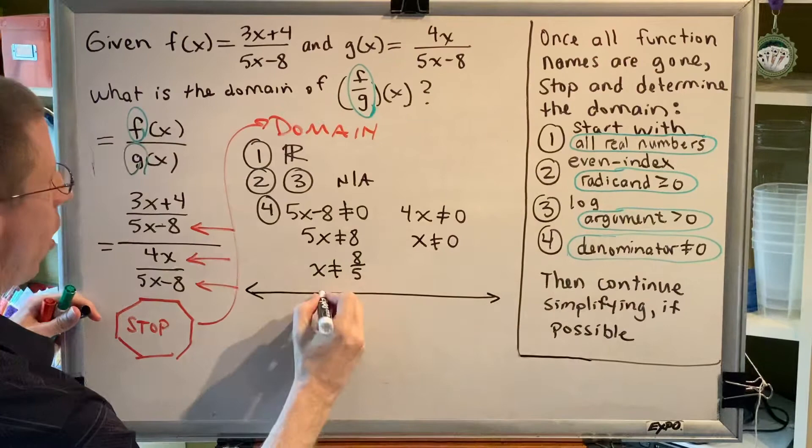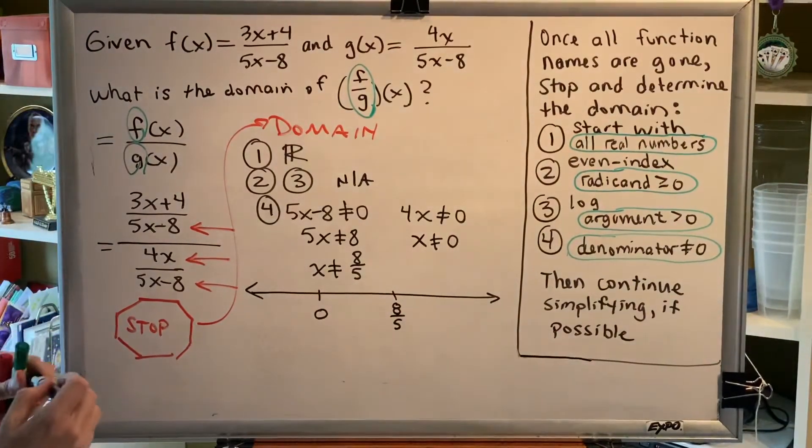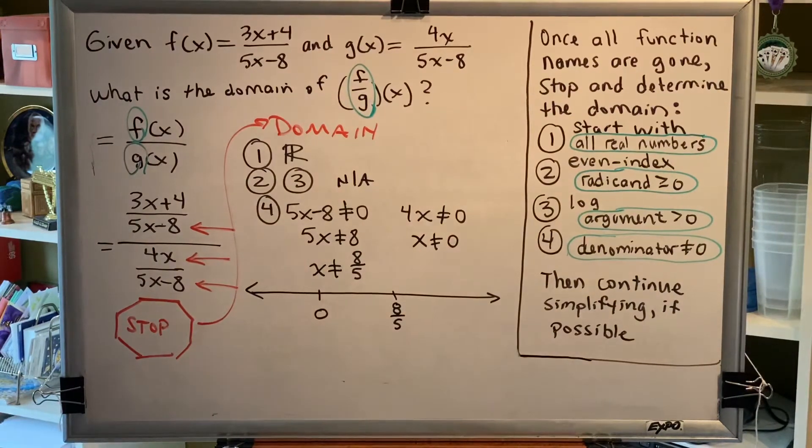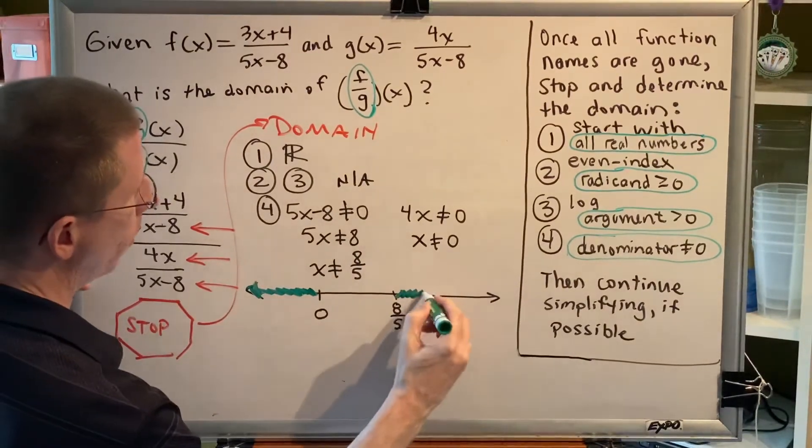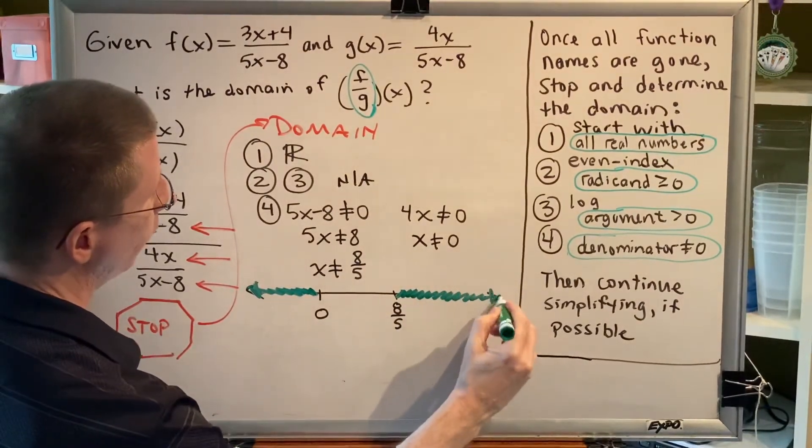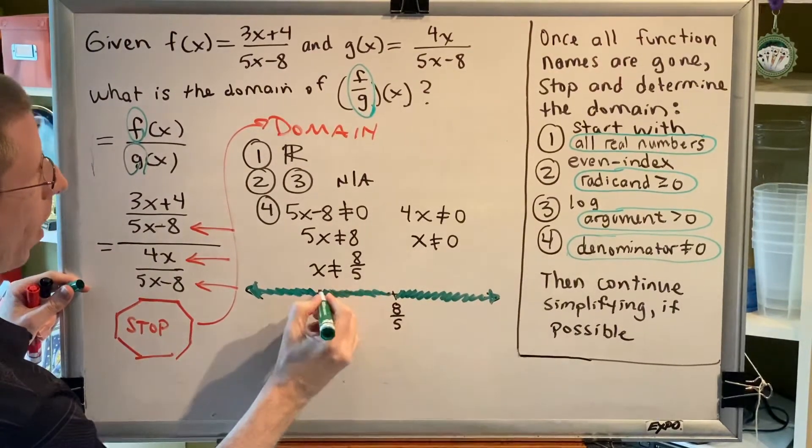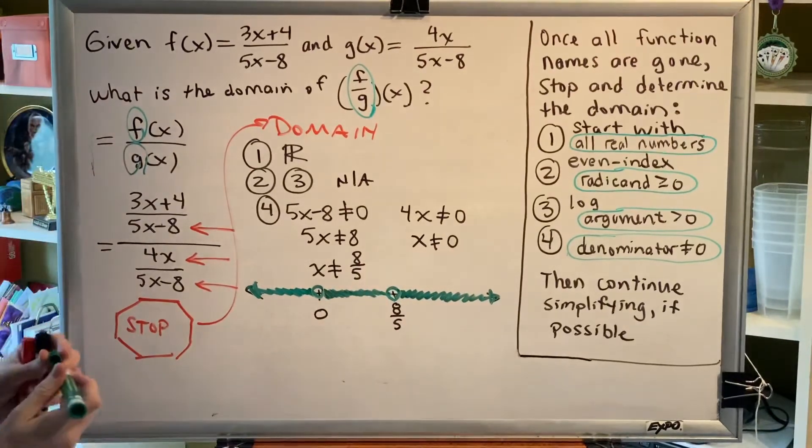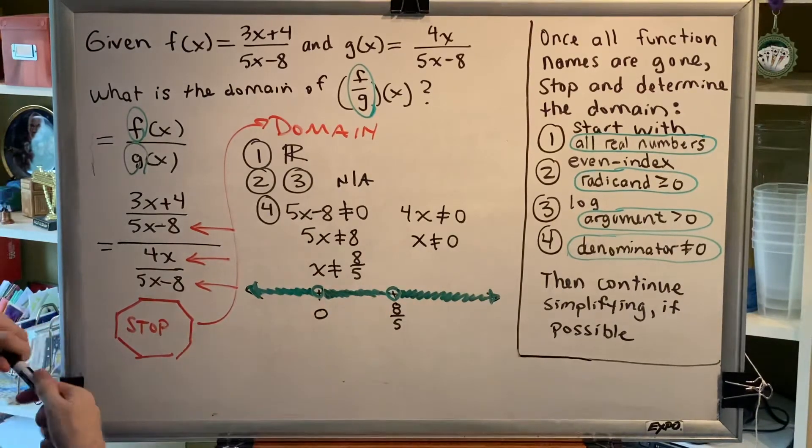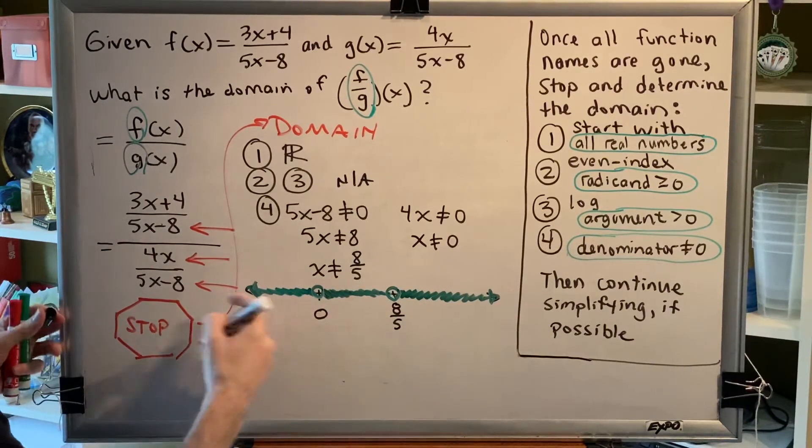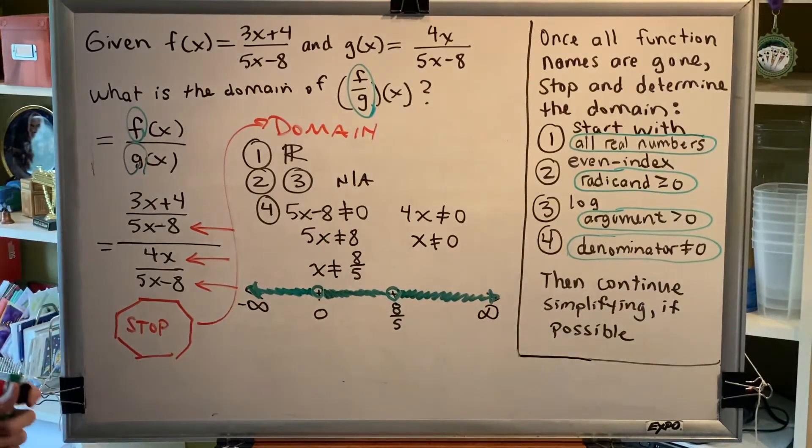To write this as an interval, it's often helpful to create a number line first. If we want every number in the world other than zero and 8 fifths, that means we want all the numbers that are to the left of zero, all the numbers that are to the right of 8 fifths, and all of the numbers that are in between the two values, but not zero and not 8 fifths. So we can see that this gives us three distinct intervals, and we must join them all together to create our final answer. Left forever is negative infinity, right forever is positive infinity. So let's make our intervals.